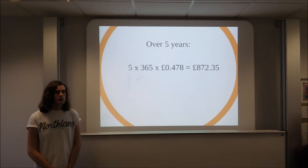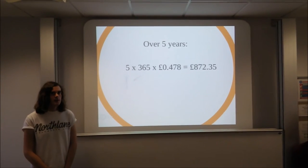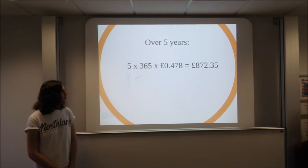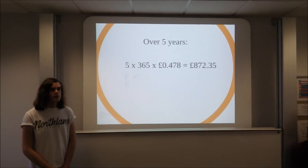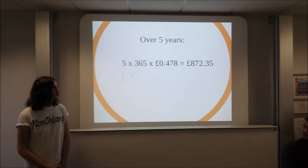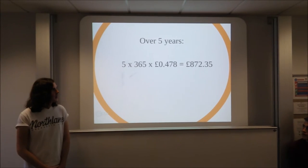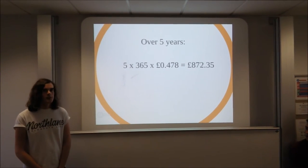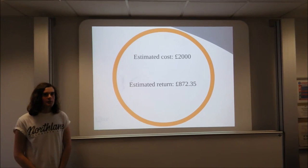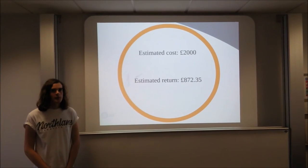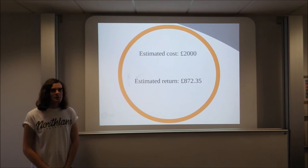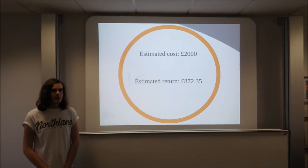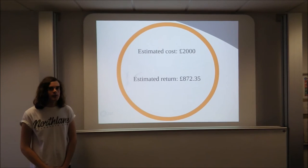An energy generating speed hump is estimated to last 3 to 5 years. Therefore, over 5 years, the money returned will be 5 years times 365 days times 47.8 pence. In total, this will be 872.35 pence. An energy generating speed hump has an estimated cost of £2,000, which is the same as a standard speed hump. Therefore, over its 5 year lifespan, it is estimated to produce 872.35 pence worth of electricity, meaning it will not generate enough energy to pay for itself.